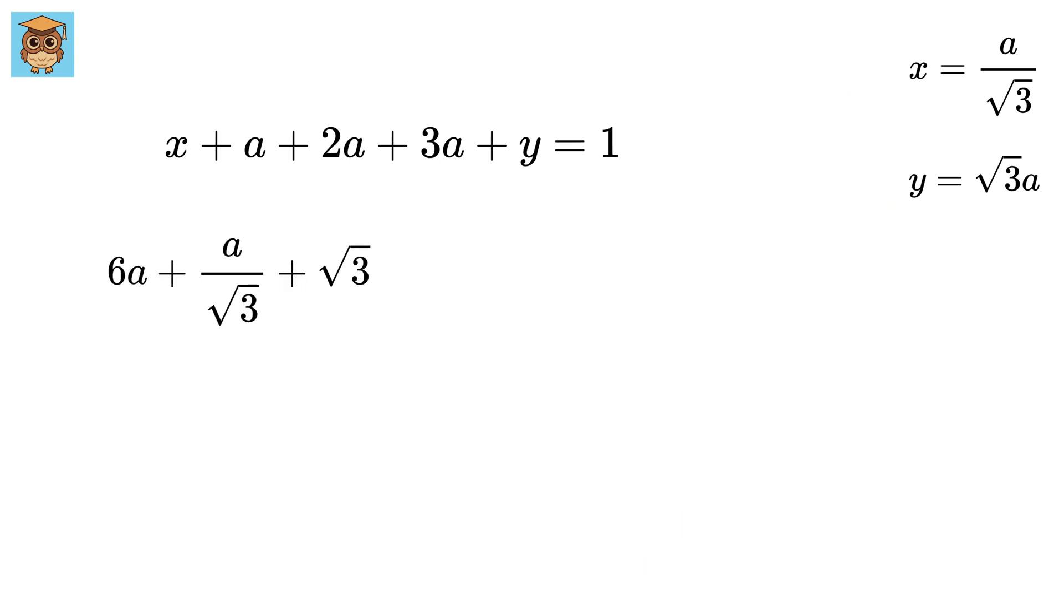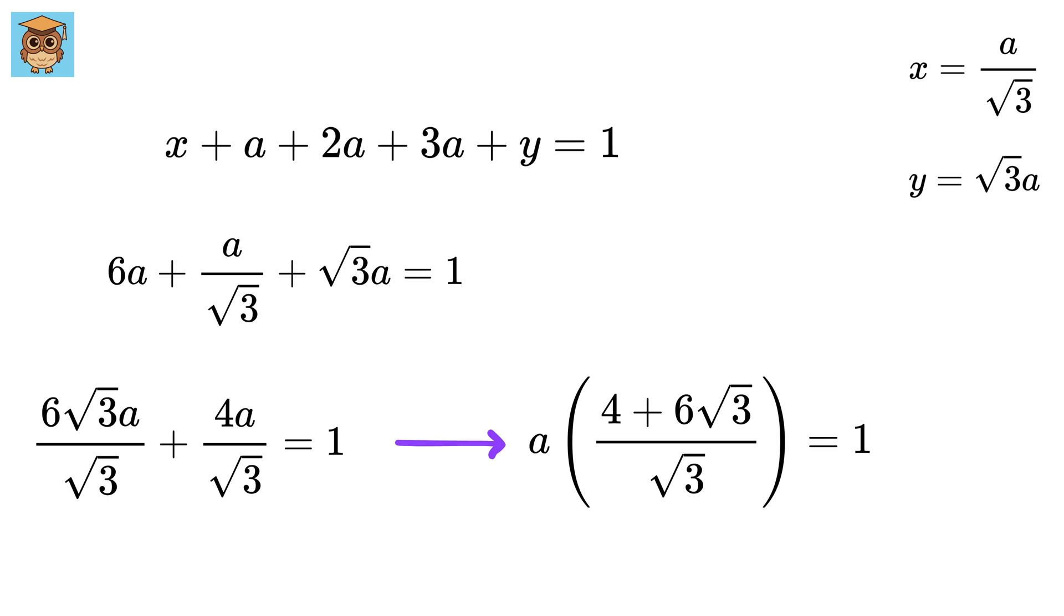This will be 6a plus a by root 3 plus root 3a equals 1. This part becomes 4 by root 3a. Multiply and divide by root 3 here to get 6 root 3 by root 3 and take a as common to make it 4 plus 6. Root 3 by root 3 times a equals 1, or a equals root 3 by 4 plus 6 root 3.